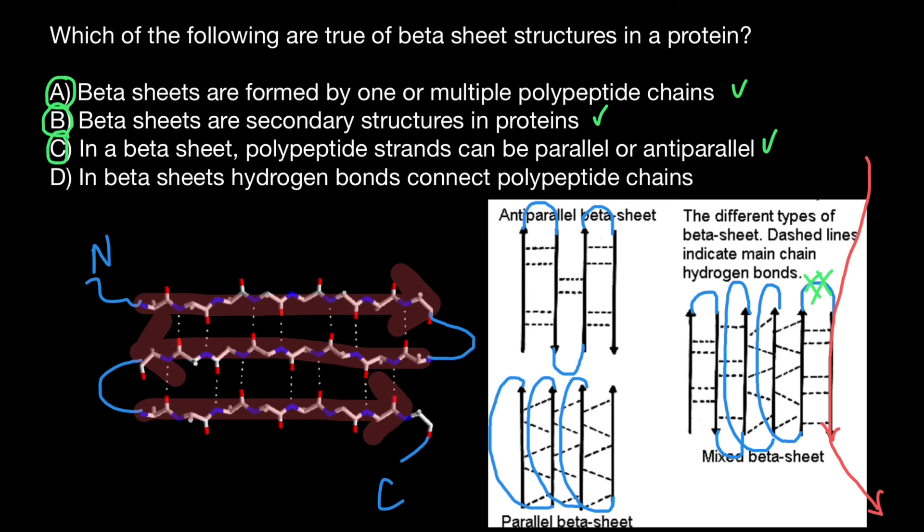And the last one, in beta sheets, hydrogen bonds connect polypeptide chains. And this is also true statement. We can circle this variant as well. And this is all for today. Subscribe and see you in the next video. Goodbye.